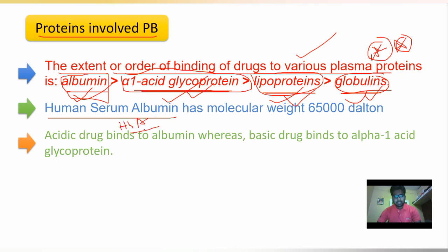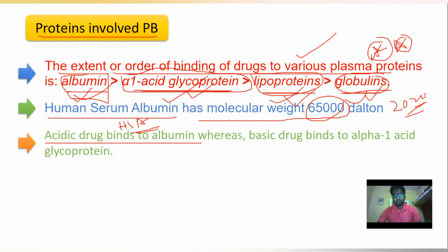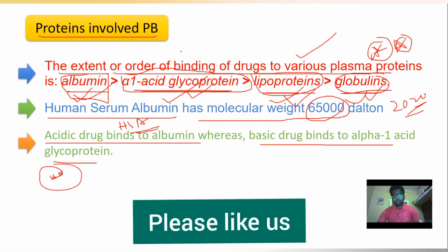Albumin has a molecular weight of 65,000 Dalton — this was asked in GPAT 2020. One of the most important points regarding protein binding is that acidic drugs generally bind to albumin, whereas basic drugs bind to alpha-1 glycoprotein. This is a very important point.